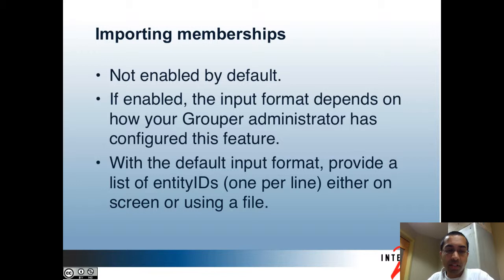The admin UI also has a method of importing memberships. This feature is not enabled by default, so you may not necessarily see it. Even if it is enabled, the input format depends on how it's been configured by your Grouper administrator — for instance, whether the input is tab or comma separated, and which field contains the entity ID or identifier. By default, the first field should be the entity ID and all other fields are ignored, so providing a list of entity IDs one per line is sufficient.